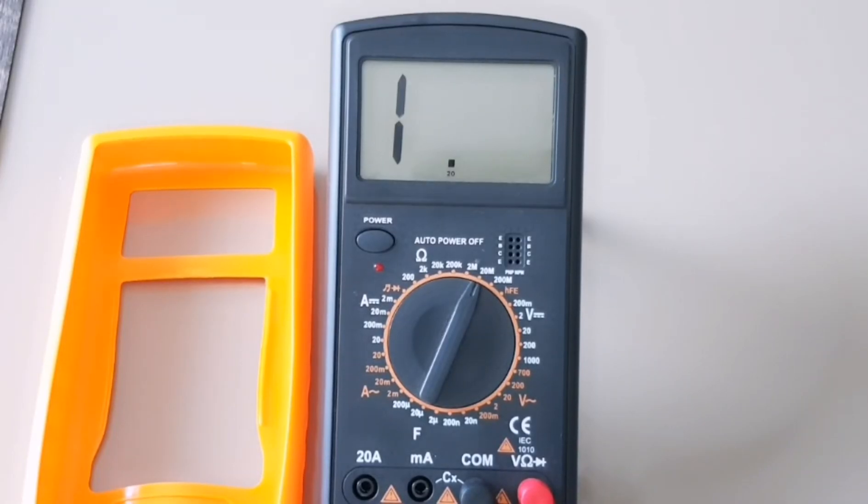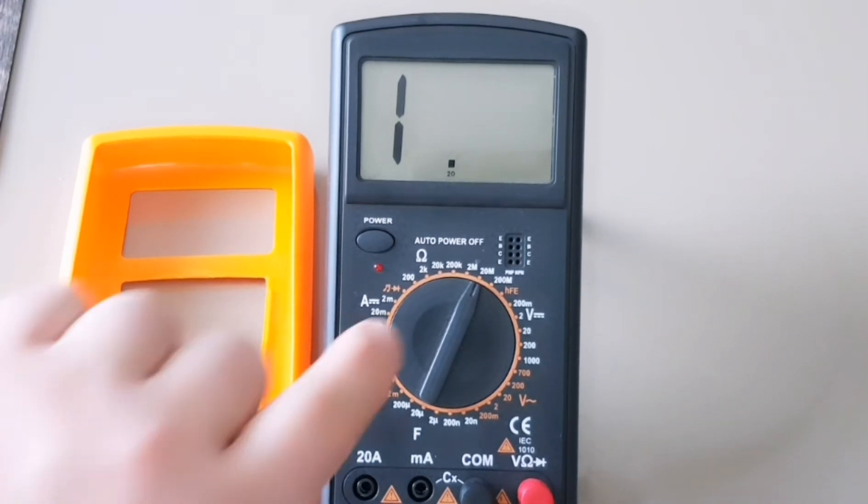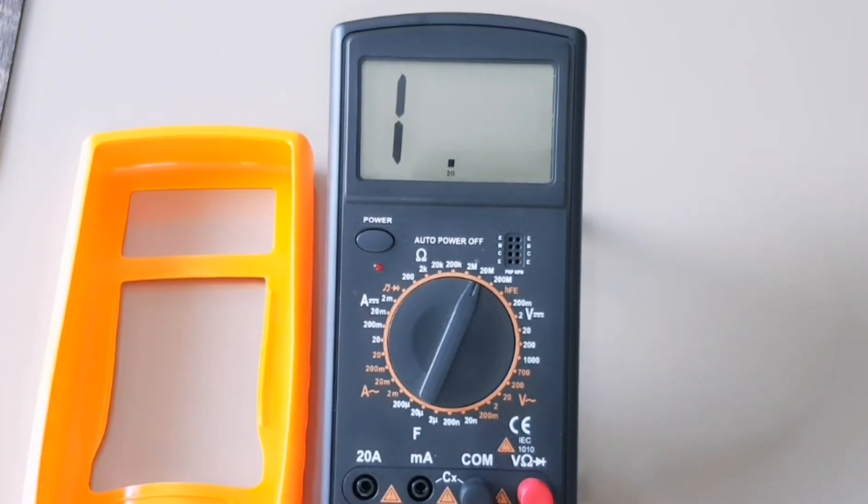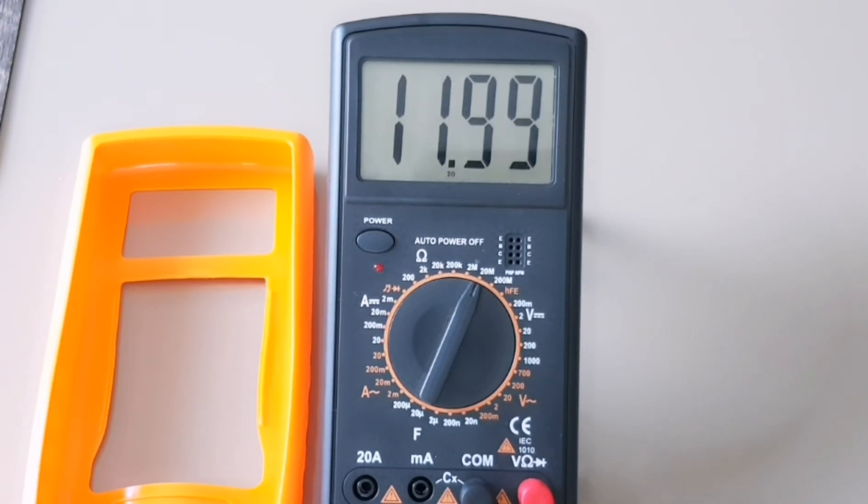Okay, so just some basic quick testing here. Here we've got a good old 10 mega ohm resistor. This being a non-auto ranging multimeter, as you can see, we've got it set to the 20 mega ohm range, and we'll just see how close we get to 10 mega ohms. So there you have it. So 10.04, so close enough.